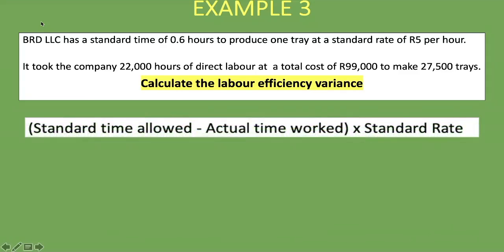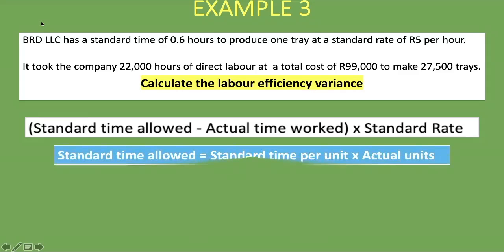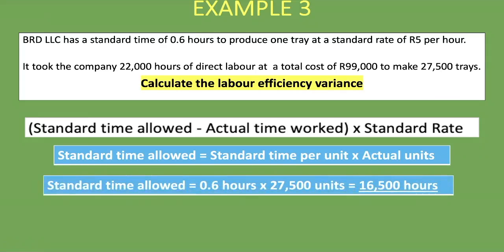Applying the formula: Standard Time Allowed − Actual Time Worked × Standard Rate. The standard time per unit is 0.6 hours per tray. Actual units produced: 27,500 trays. So: 0.6 × 27,500 = 16,500 hours. That is our standard time allowed — the time we expected to take producing the 27,500 trays.